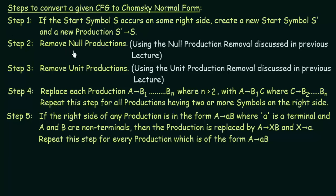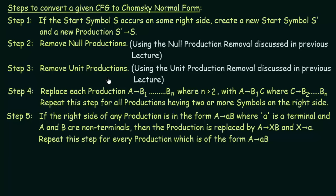Step 2: Remove Null Productions. In the last lecture I taught you how to remove Null productions, so following those steps you have to remove the Null productions if there are any, using the Null production removal discussed in the previous lecture. Step 3: Remove the Unit Productions. This also was discussed in the previous lecture, so using the unit production removal discussed there, you have to remove all the unit productions in the CFG if there are any.